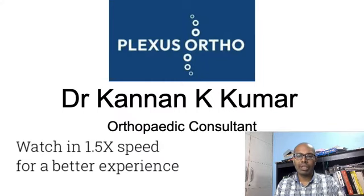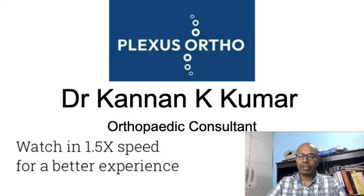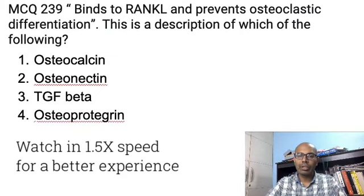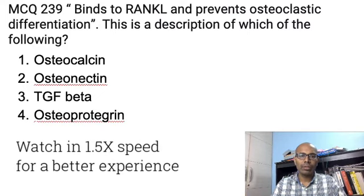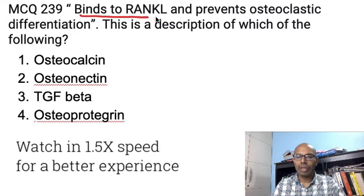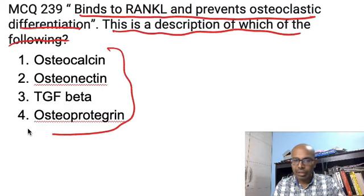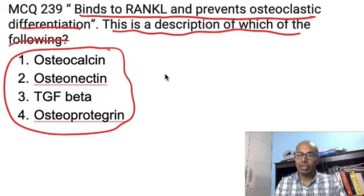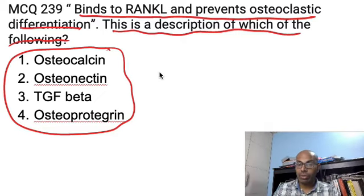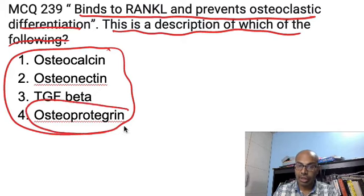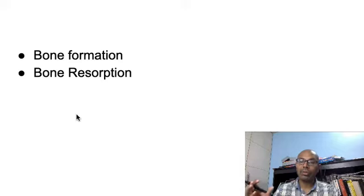Hi friends, welcome to Plexus Ortho. My name is Dr. Kannan Kumar, and today we're going to discuss one of the MCQs put up a couple of days ago in the Telegram channel — MCQ number 239. The question was: 'Binds to RANK ligand and prevents osteoclastic differentiation — this description is of which of the following entities?' The options were osteocalcin, osteonectin, TGF beta, and the correct answer is osteoprotegerin.